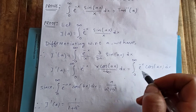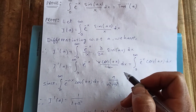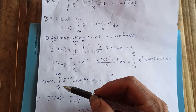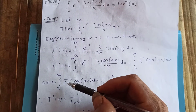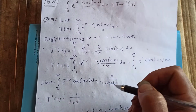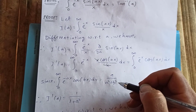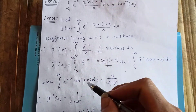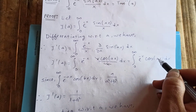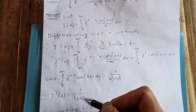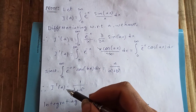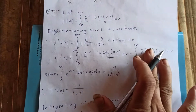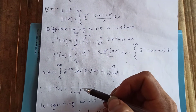In the previous result, we proved that the integral from zero to infinity of e to the negative x cos(bx) dx equals a over a squared plus b squared. Putting a equal to 1 and b equal to a here, you get I prime of a equals 1 over 1 plus a squared.